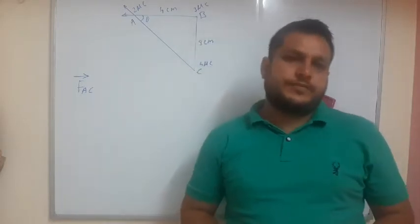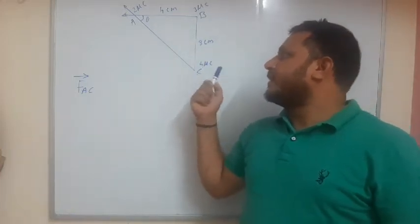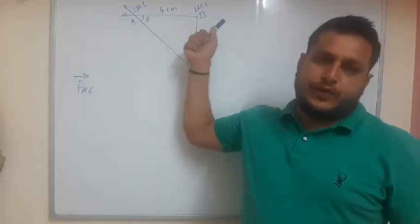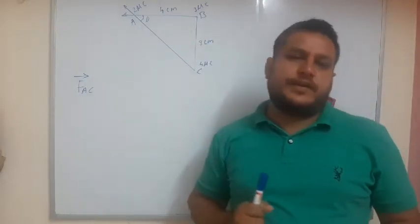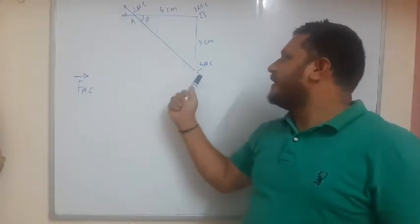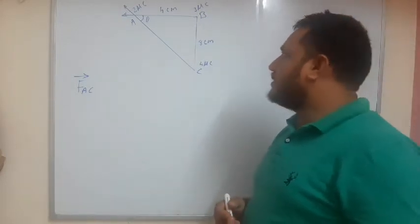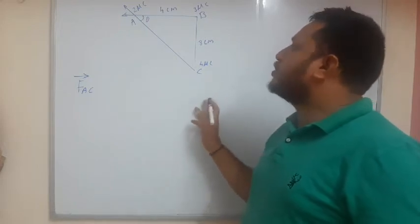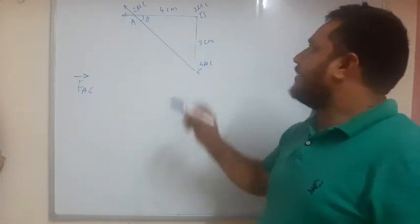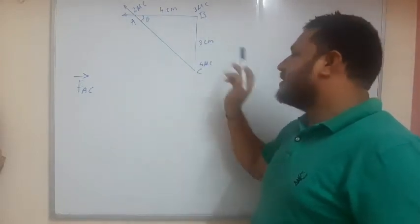In our previous lecture we have seen this diagram and the force act at A due to B. In this lecture we will see the force at A due to C. So before going through the equation we must know the value of AC. Like here AB is 4 cm and here BC is 3 cm.